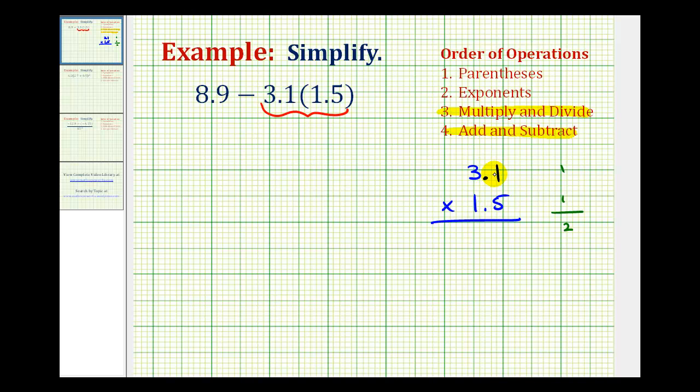So we'll start by multiplying by 5. 5 times 1 is 5. 5 times 3 is 15. Now we'll multiply by 1. And 1 times 1 is 1. But we're going to put this in the second column from the right. And then 1 times 3 is 3.